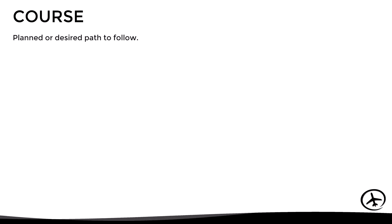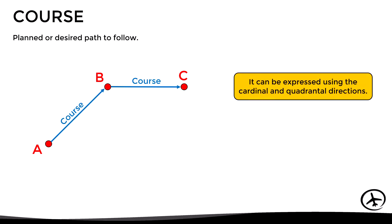The course is basically the planned or desired path to follow. In a route consisting of several legs, there will be a specific course for each one. This course can be expressed using the cardinal and quadrantal directions — for example, the course from A to B would be northeast, while the course from B to C would be east.